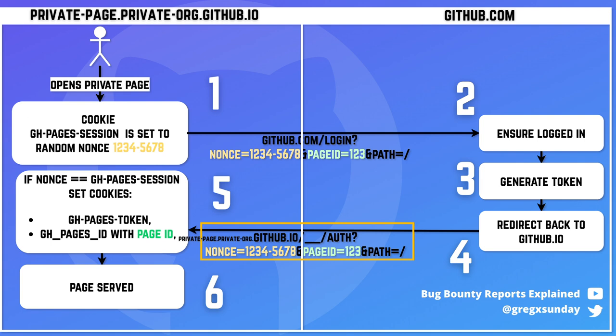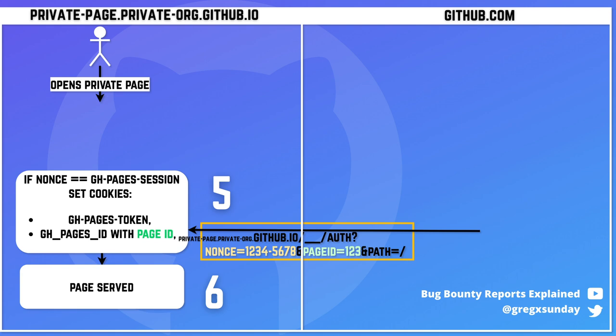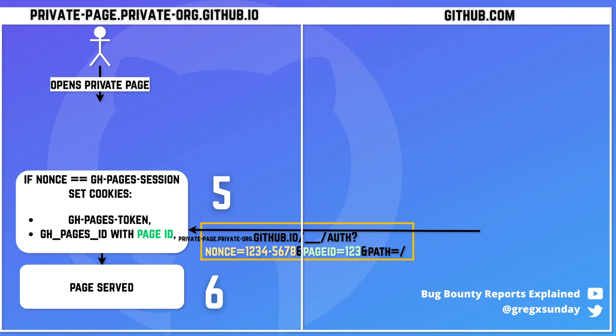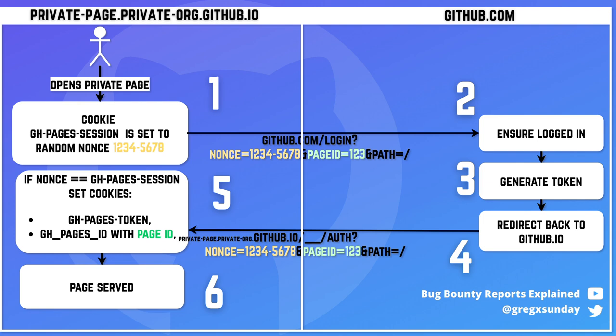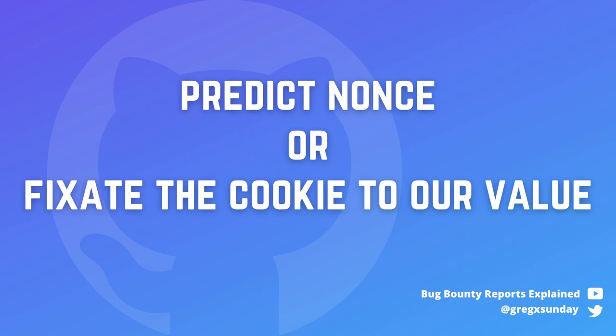But the problem is that this injection is in the fifth request of the whole flow. You can't just take this one request, put whatever in the other parameters and have it work — you need to send the victim into a valid authentication flow with just this one malicious parameter. As you remember, there were three parameters: nonce, path, and page ID. Page ID will be our payload, path doesn't matter much, but the problem is the nonce. GitHub.io checks if the nonce from the parameter coming from GitHub.com is the same as the nonce in the cookie. So you either need to predict the nonce, or set the cookie to a known value and then send the same value as the parameter.